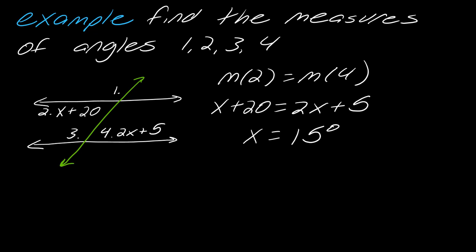I'm going to get that x will ultimately be equal to 15 degrees because I can subtract the x's off and subtract the 5 off and I get 15 degrees. So then if I just continue on with that, then this angle I take the 15 plus the 20 that will give me 35.